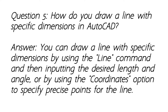Question 5: How do you draw a line with specific dimensions in AutoCAD? Answer: You can draw a line with specific dimensions by using the Line command and then inputting the desired length and angle, or by using the coordinates option to specify precise points for the line.